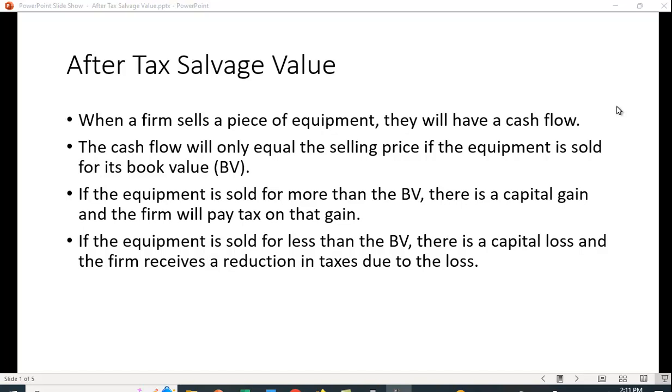If the equipment is sold for more than its book value, the firm has a capital gain on the piece of equipment and the firm has to pay tax on that capital gain. If the equipment is sold for less than the book value, there's a capital loss and the firm receives a reduction in taxes due to the loss.